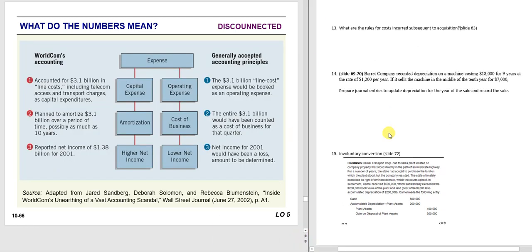Applying this to real life: WorldCom is a well-known corporate fraud case. They incurred line costs—renting telephone lines—that benefited the business for only one year, so the correct treatment was to debit line rent expense and credit cash for $3.1 billion. What did WorldCom do? They capitalized it—they debited the asset 'line costs.' This took $3.1 billion out of expense and into an asset, which increases assets, decreases expense, and therefore increases net income.